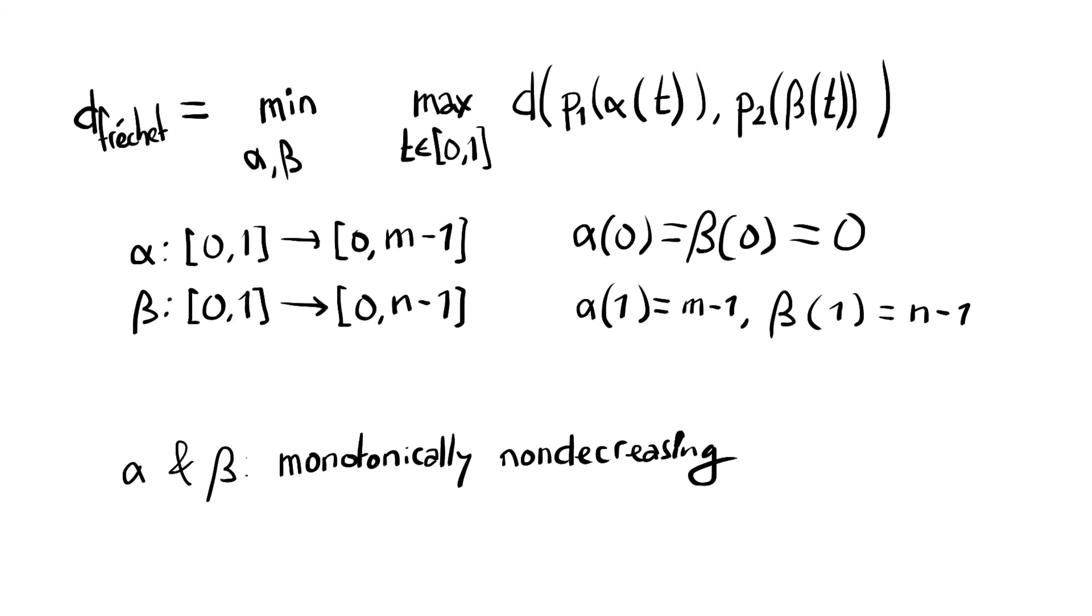And here's the last property that people tend to forget when I ask them in a live lecture which is the function should be continuous. We don't allow any teleportation. And this is it. This is the definition of Fréchet distance.